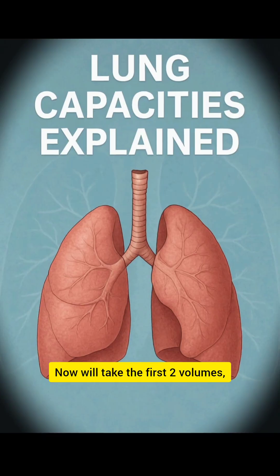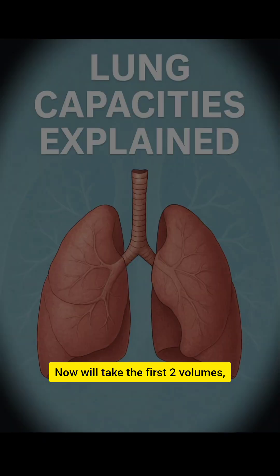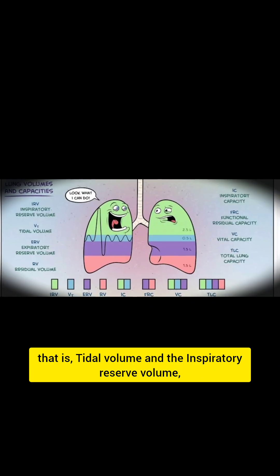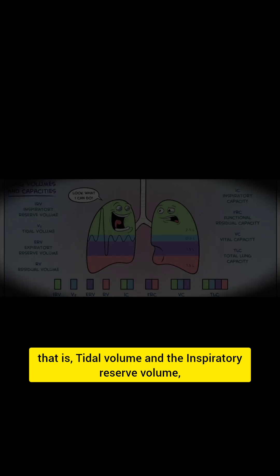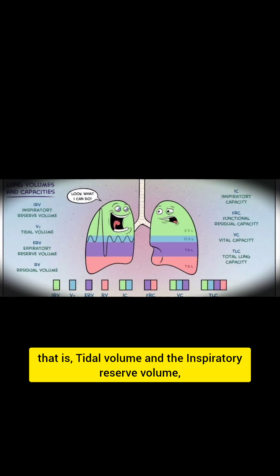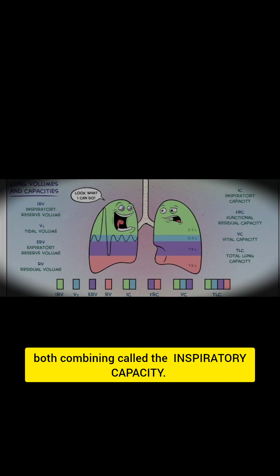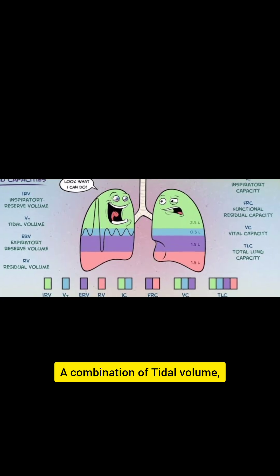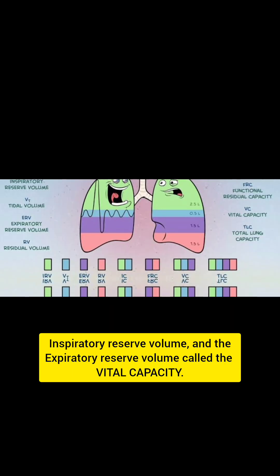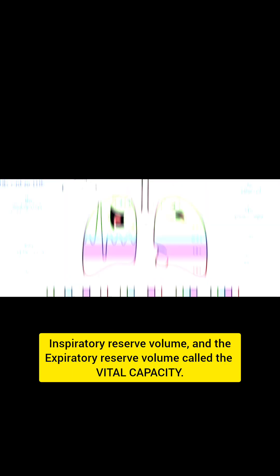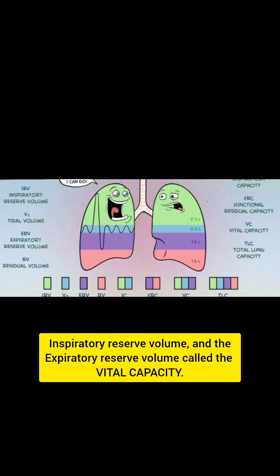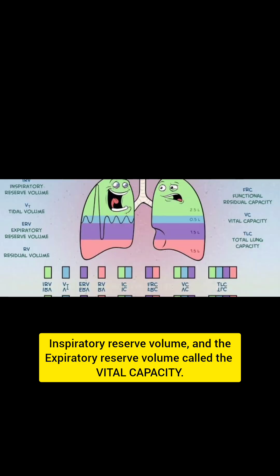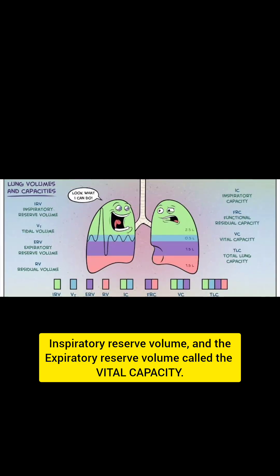Now we'll take the first two volumes — tidal volume and the inspiratory reserve volume. Both combining are called the inspiratory capacity. A combination of tidal volume, inspiratory reserve volume, and the expiratory reserve volume is called the vital capacity.